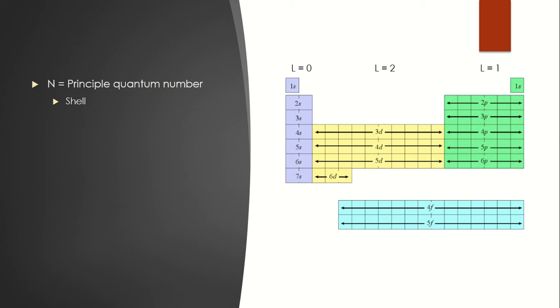Now the shell or the principal quantum number will increase the farther down the periodic table you go. So at the top where you have hydrogen, you're going to have one, while at the bottom we're going to have seven.